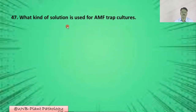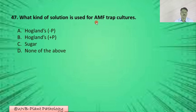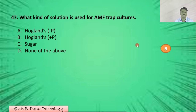Question number forty-seven: What kind of solution is used for AMF trap culture? A: Hoagland solution minus phosphorus; B: Hoagland solution plus phosphorus; C: sugar solution; D: none of the above. The correct option is A: Hoagland solution minus phosphorus.